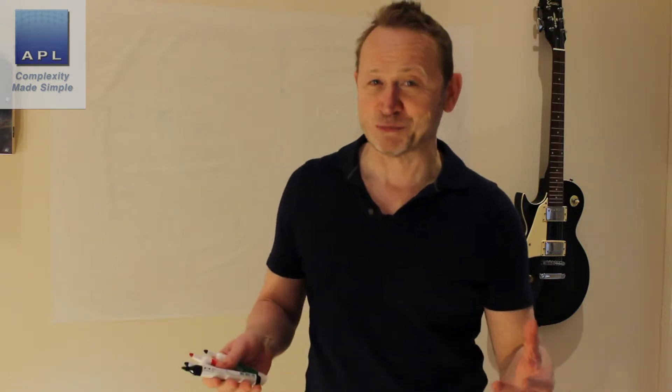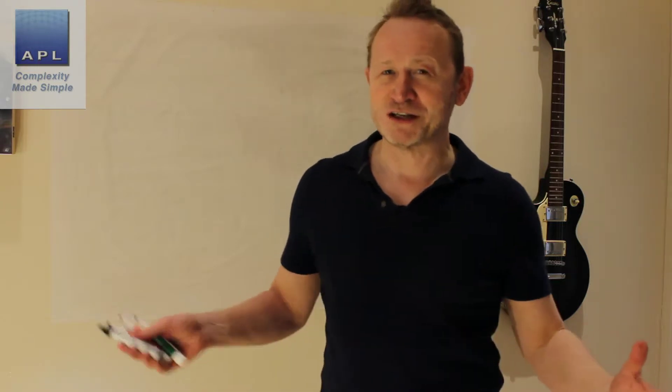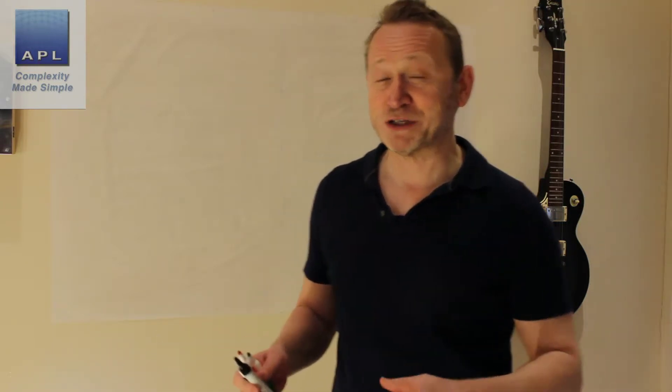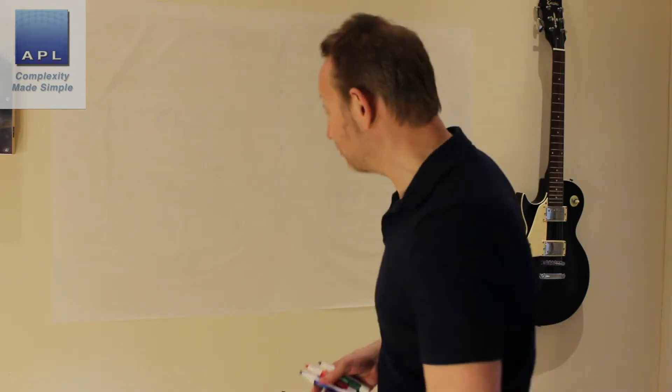Welcome to Complexity Made Simple. My name is Paul Allen and the subject of today's newsletter is how to select your continuous improvement projects. This could have been called how to select your Six Sigma projects, but I've said continuous improvement projects because the methods I'm going to describe aren't necessarily about Six Sigma — they could be, but actually all your projects should probably be selected using one or all three of these methods.